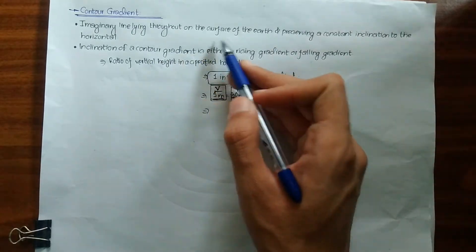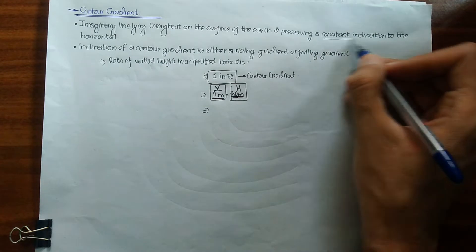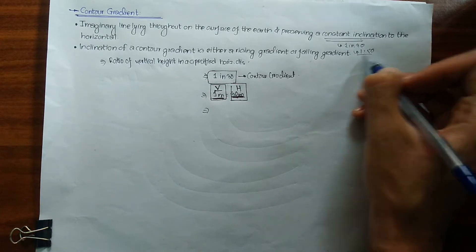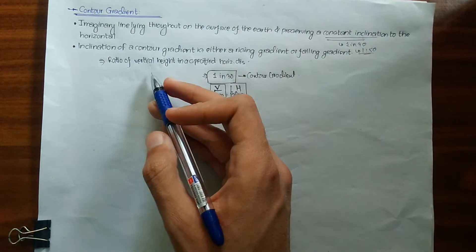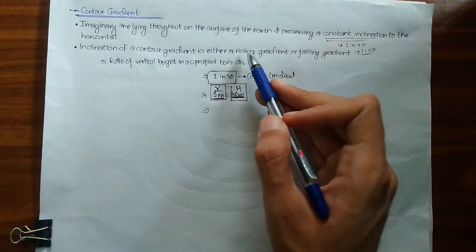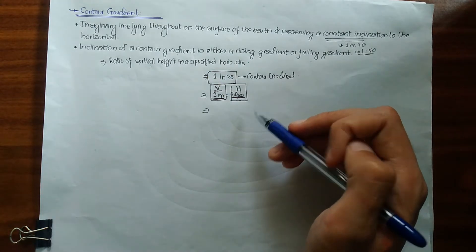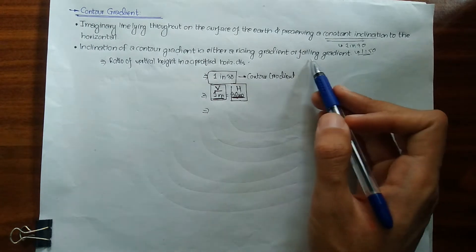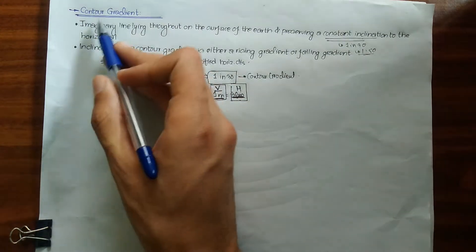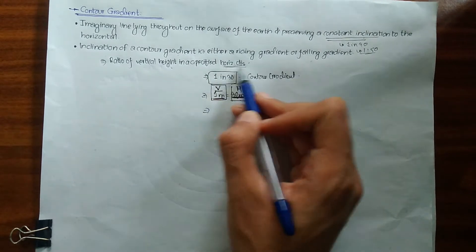Contour gradient is simply the imaginary line lying throughout on the surface of earth and preserving a constant inclination to the horizontal. This constant inclination can be either 1 in 30 or 1 in 50 — it does not vary for a specific contour gradient. The nature of a contour gradient is either a rising gradient or a falling gradient. Mathematically, contour gradient is defined as the ratio of vertical height to a specified horizontal distance.